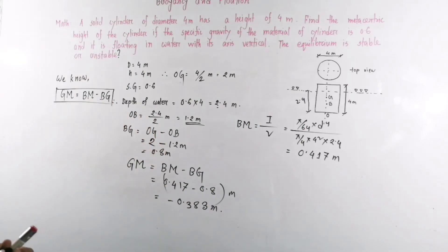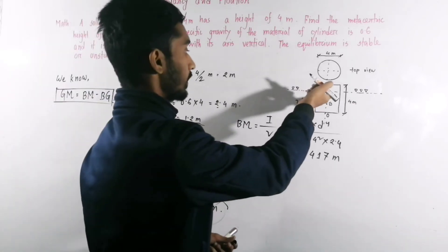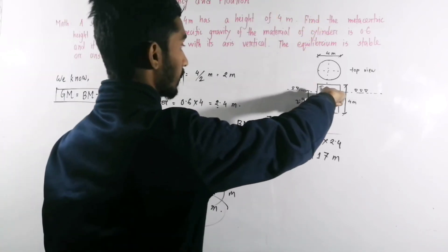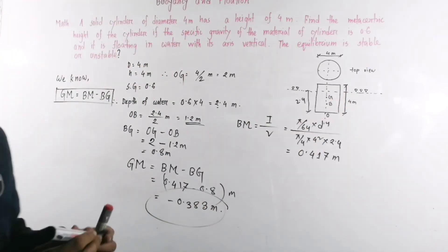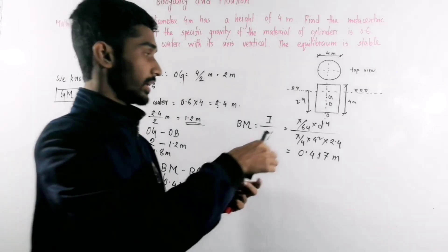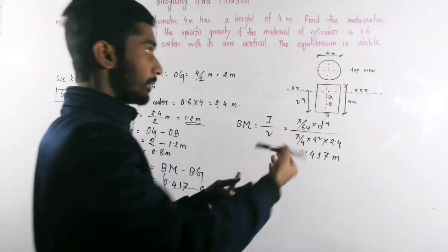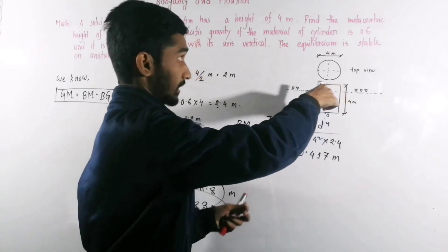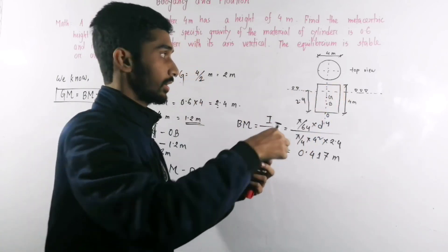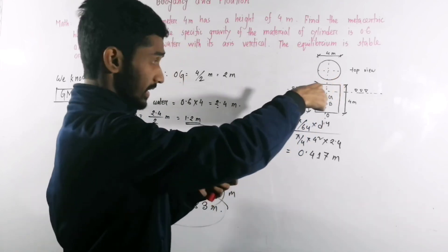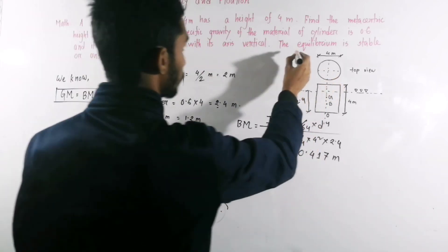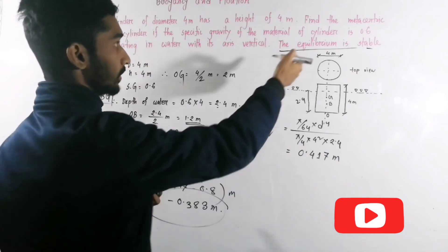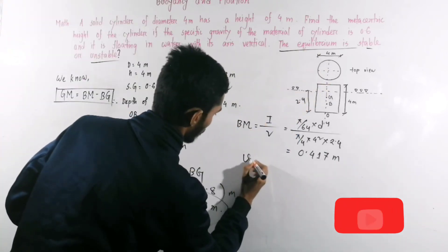We know GM, if G is above M then it would be stable, but here it's negative, meaning GM is below, center of gravity is above. So it cannot remain stable, it will become unstable. The question asked whether equilibrium is stable or unstable. So we can say the equilibrium is unstable.